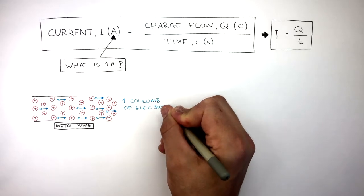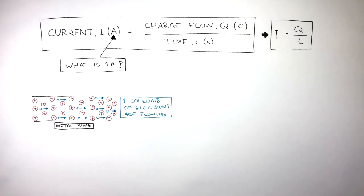In this diagram, one Coulomb of electrons are flowing. This is what is known as the charge flow. Remember, Coulomb is the unit of charge. Charge is how we quantify a very large number of electrons.